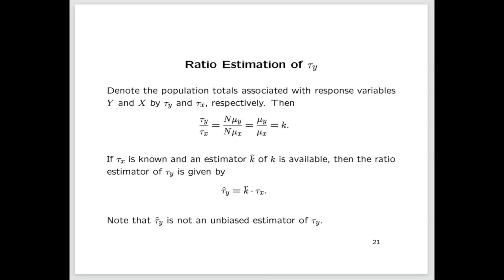Now if τ_x is known and an estimator k̂ of k is available, then the ratio estimator of τ_y is given by the following: τ̂_y, the estimator of τ_y, is equal to k̂ times τ_x, which is the total of x in the entire population.